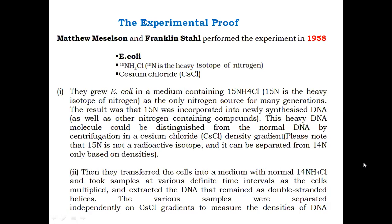Why E. coli? Because E. coli's doubling time is 20 to 30 minutes, so we can study more generations in less time and see the variations quickly. They took nitrogen from the heavy isotope, N15, in ammonium chloride. Because DNA composition contains nitrogen, this would help identify the DNA. They also used cesium chloride for density gradient centrifugation. Keep in mind, this is a heavy isotope, not a radioactive isotope — it can be identified through density gradient because it is heavy and will settle down.